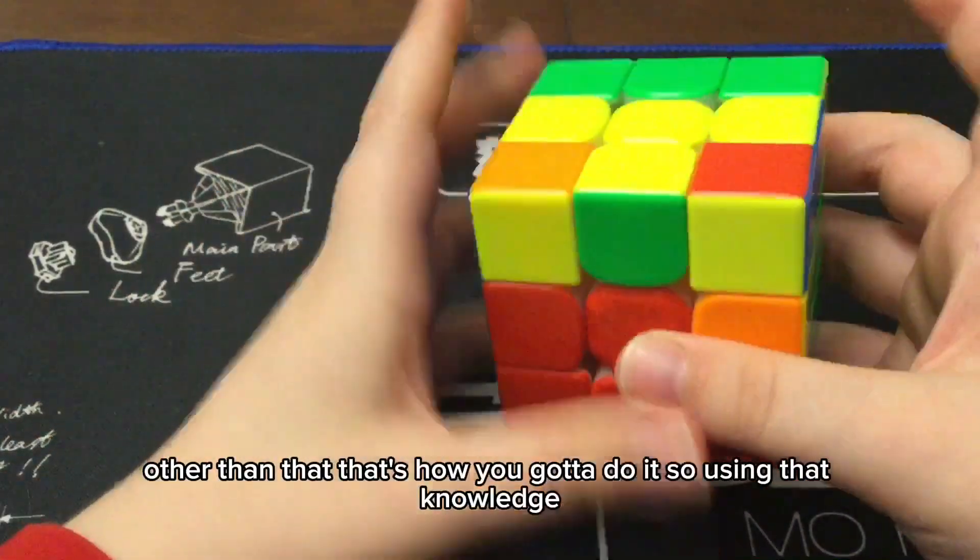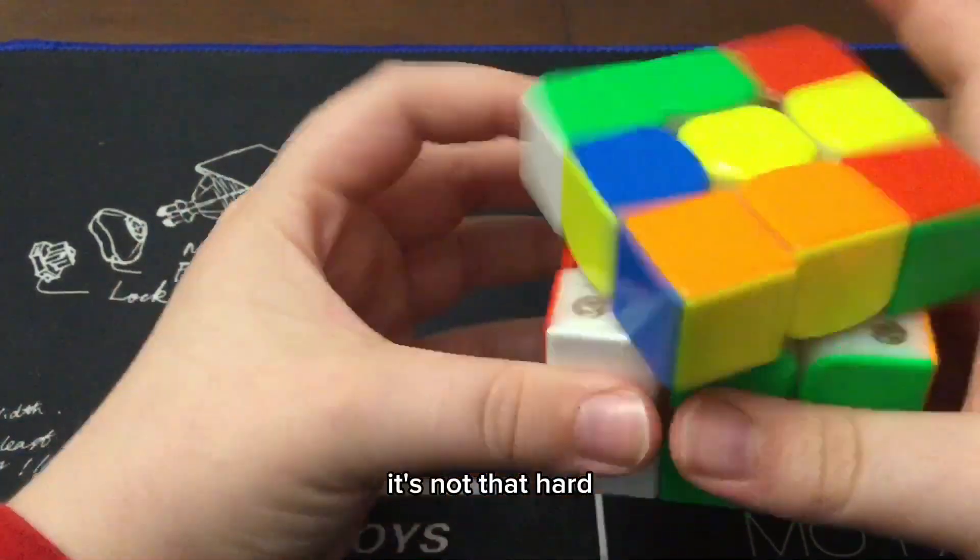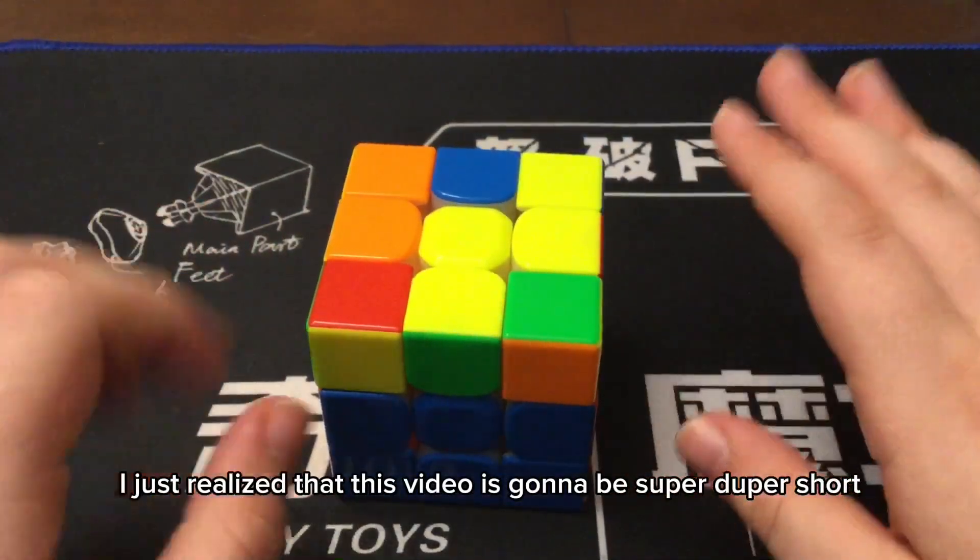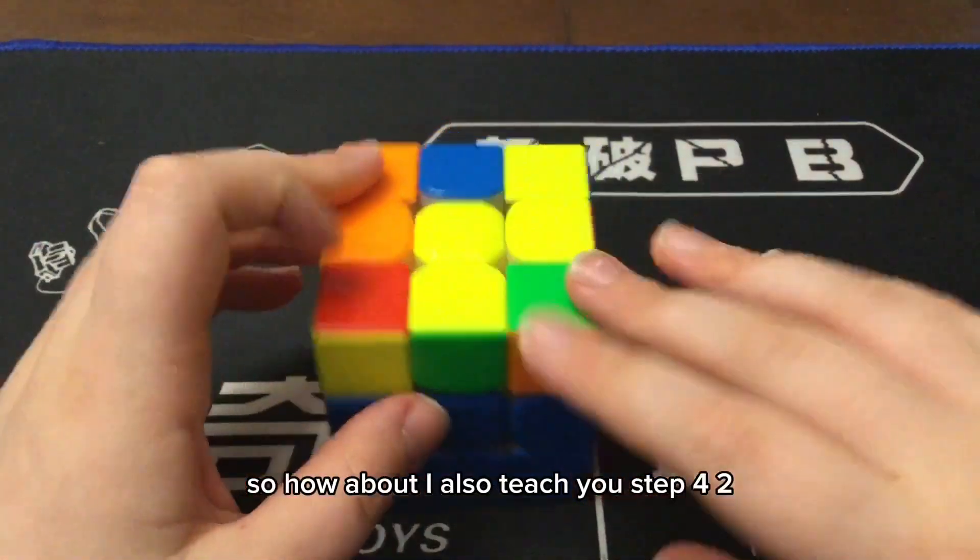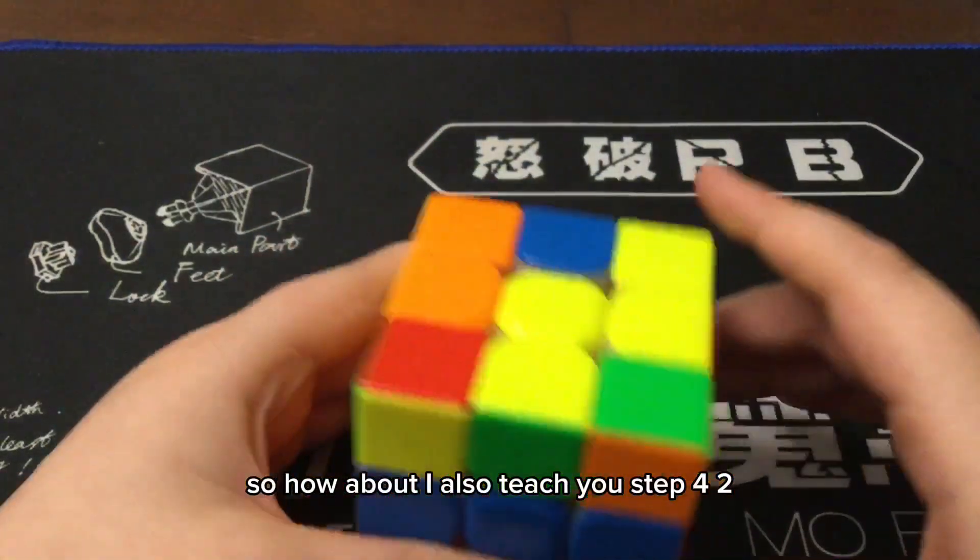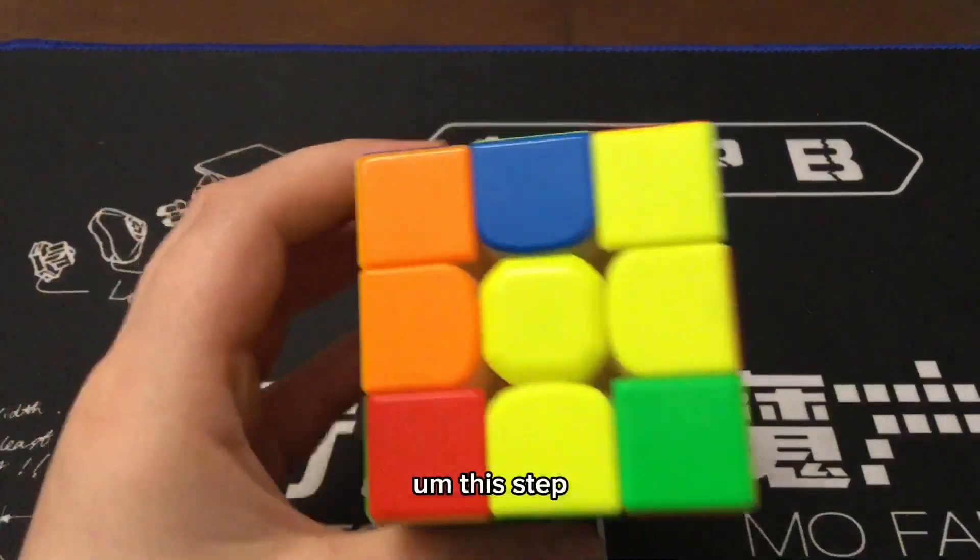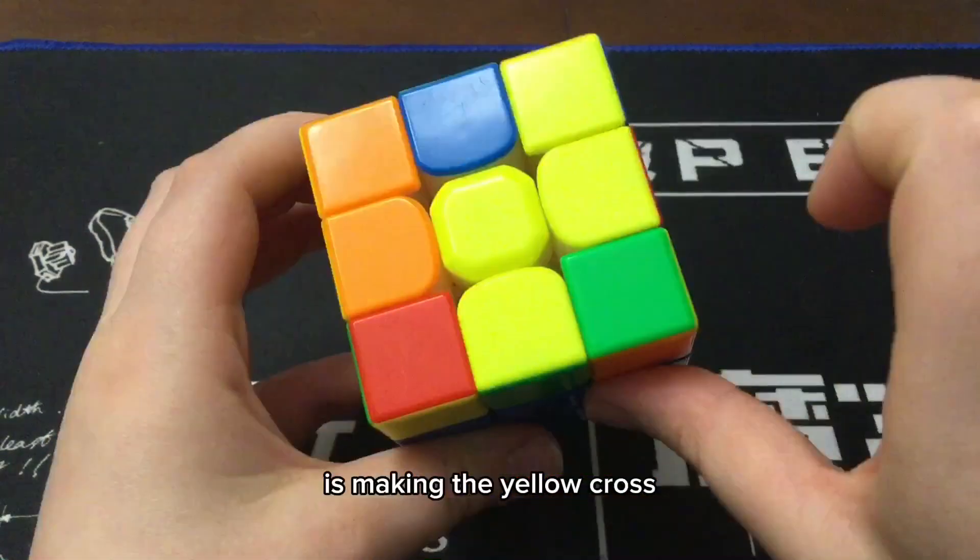So, using that knowledge, you can solve the rest of it. It's not that hard. I just realized that this video is gonna be super duper short, so, how about I also teach you step four. This step is making the yellow cross.